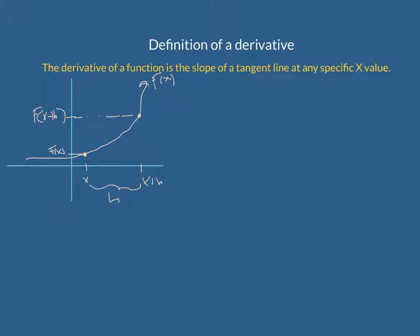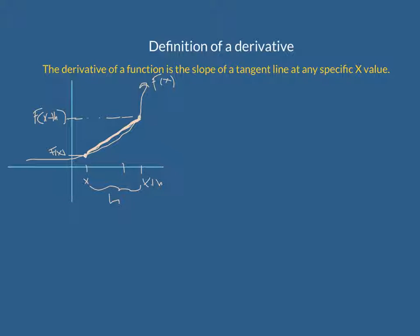Just like in instantaneous rate of change, we want to find the slope of this line — it should be a straight line. We want to keep finding it as the distance between my x values gets closer and closer to zero. As h approaches zero, the slope of my secant line will approach the slope of a tangent line, because eventually we will be right at one specific point.